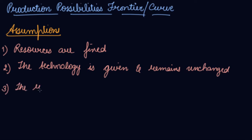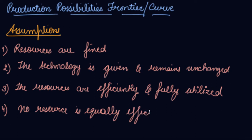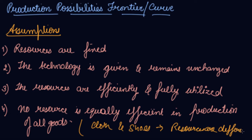Assumption 3 - resources are fully and efficiently utilized. Assumption 4 - no resource is equally efficient in the production of all goods. For example, for the production of clothes and shoes - two goods X and Y - the resources required are different, and more resources are equally efficient in production of all the goods. These are the assumptions for the production possibilities frontier.